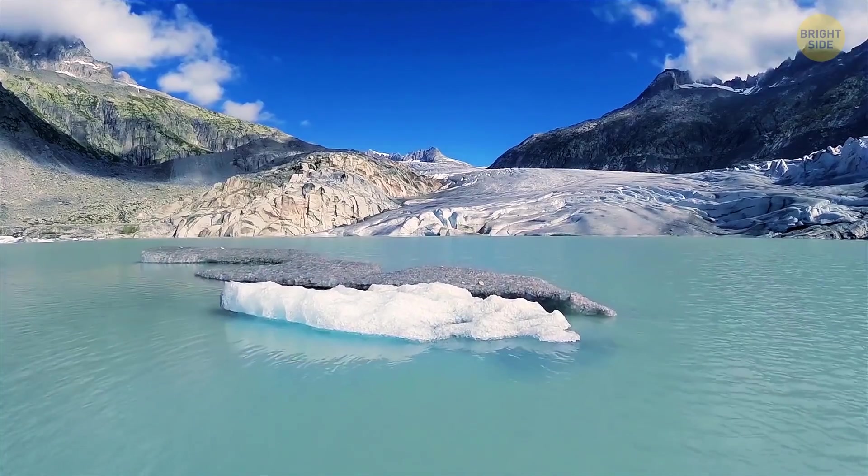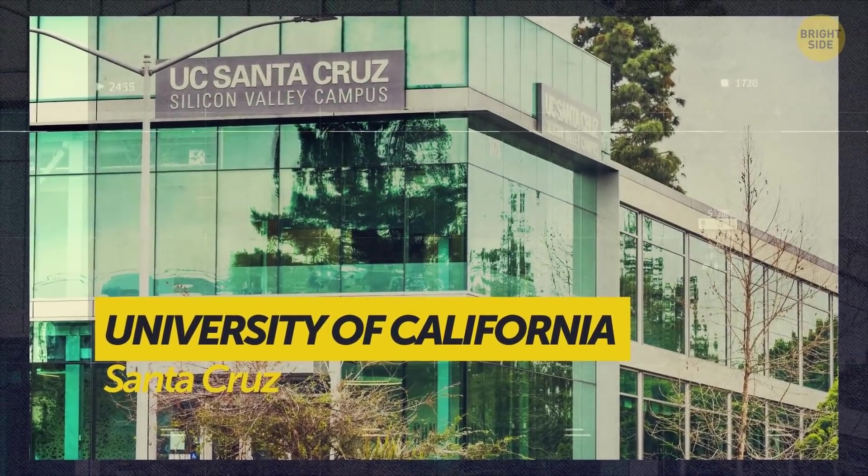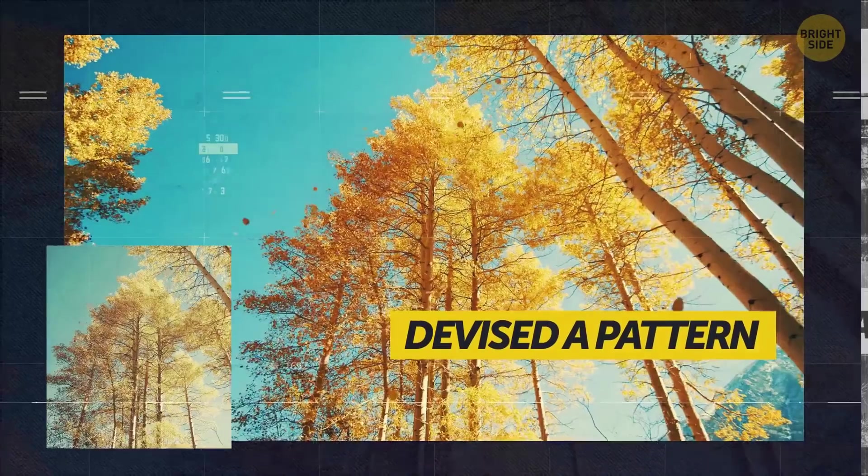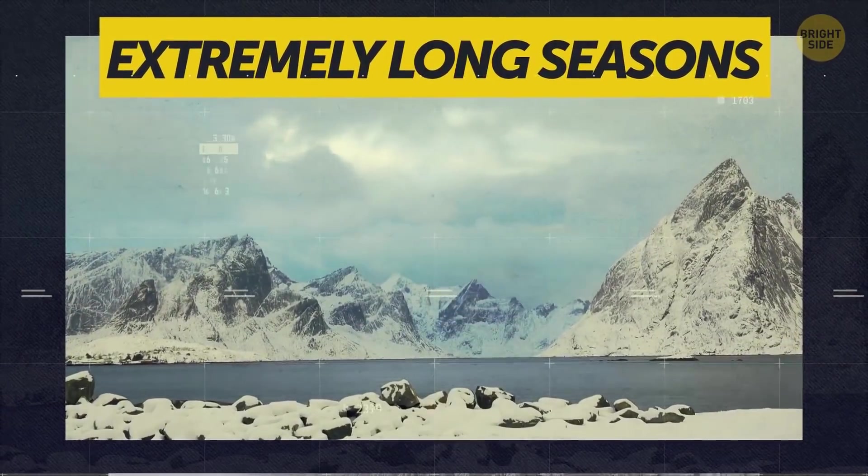Back to Earth now. The climate changes we're witnessing are most probably part of a natural cycle. Researchers from the University of California, Santa Cruz, have devised a pattern in our planet's climate variations, and they look like extremely long seasons.